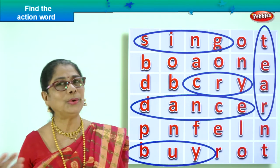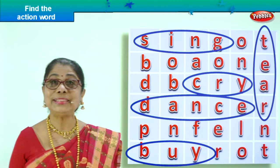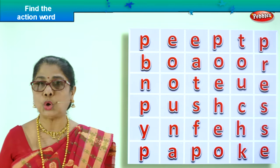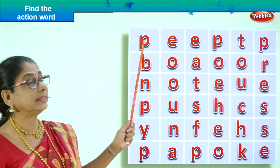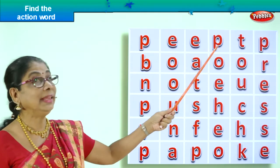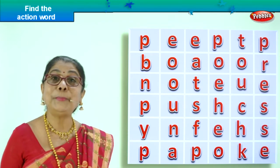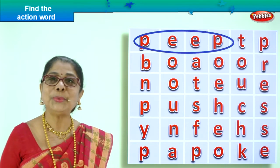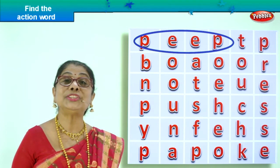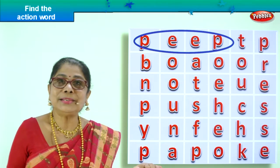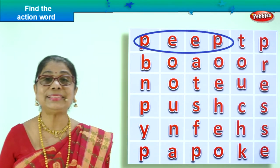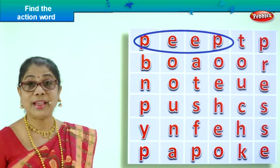Did you enjoy? Shall we go to another exercise and find some more action words? Good. Here we are, let's find them all. First, look at the letters here. P-E-E-P. What is that? Peep. You peep into your book. You peep into mummy's kitchen to see what delicious item she is making. Peep — is peep an action word? Yes, good. Let's find more.